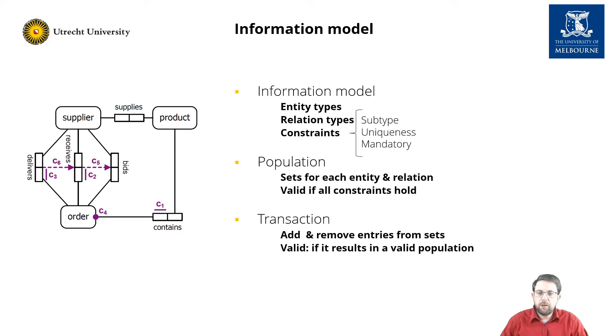An information model consists of entities and relations. We distinguish three main types of constraints: subtyping constraints, so for example a supplier can only deliver an order if it received that order; uniqueness constraints, so an order contains at most one product; and mandatory constraints, such as an order contains at least one product.